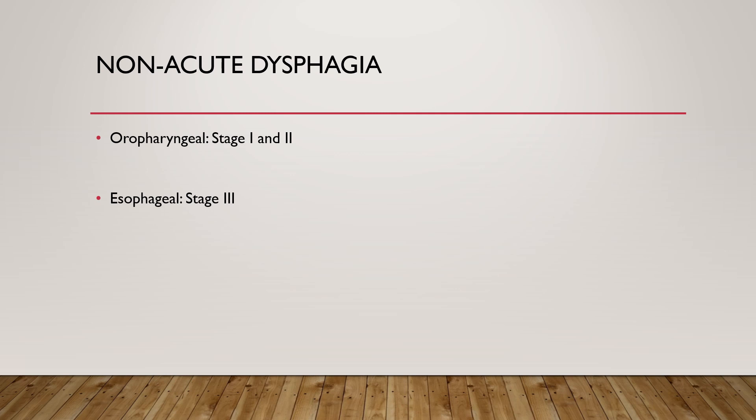Oropharyngeal dysphagia involves stages 1 and 2 of swallowing, while esophageal dysphagia involves stage 3. In oropharyngeal dysphagia, there is difficulty initiating swallowing — the patient usually points to the cervical region. It may be accompanied by nasopharyngeal regurgitation, aspiration, and sensation of residual food in the pharynx. Esophageal dysphagia occurs several seconds after initiation of swallowing, with a feeling of food stuck in the retrosternal area or suprasternal notch.